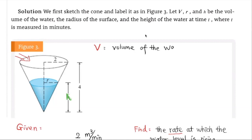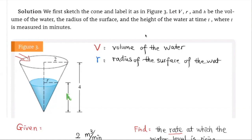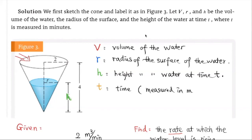The first step is to declare variables. We let V be the volume of the water, R be the radius of the surface of the water inside the cone, H be the height of the water at time t, and t be the time measured in minutes.